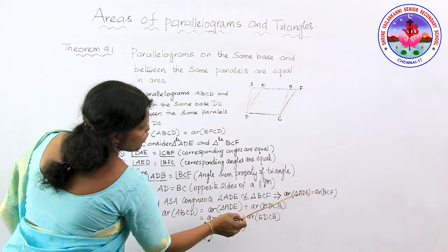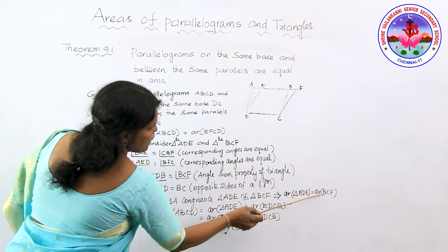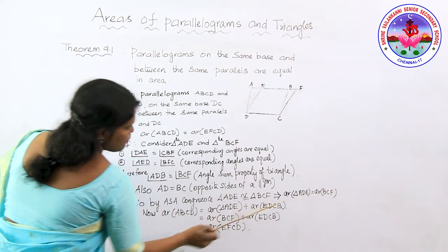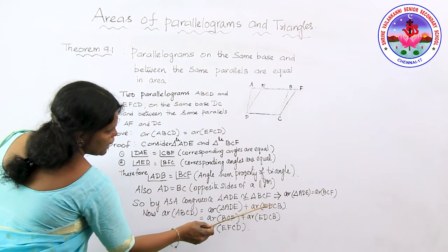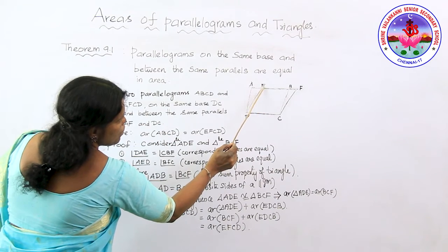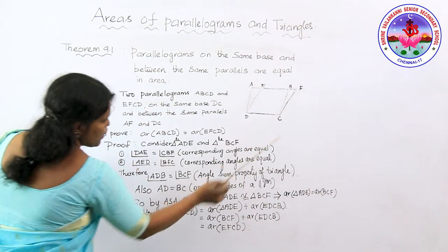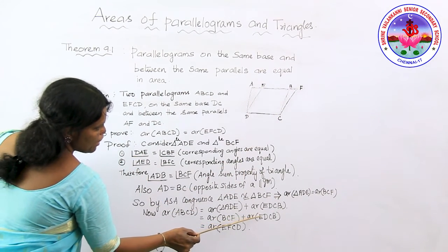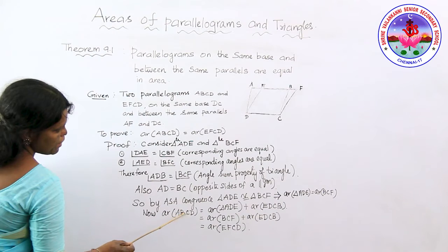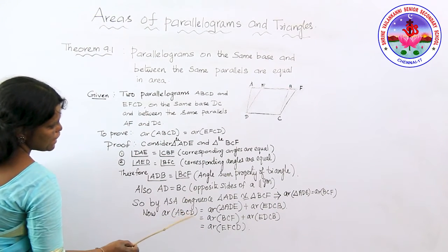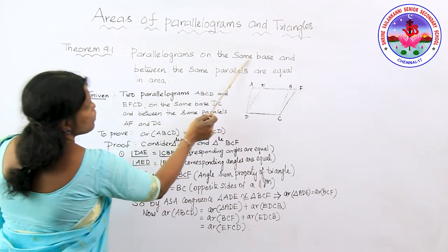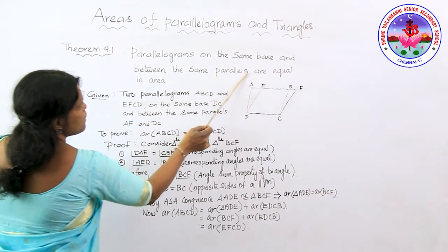Since area of ADE equals area of BCF (the two triangles are congruent), I replace area of ADE with area of BCF. So I get: area of BCF plus area of EDCB. Adding triangle BCF to the trapezoid EDCB gives the parallelogram EFCD. Therefore, area of ABCD equals area of EFCD. Hence I have proved that both parallelograms ABCD and EFCD have equal areas, verifying the theorem.